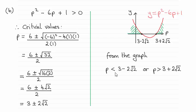And you can see then that they turn out to be two values. p is less than 3 minus 2 root 2, or p is greater than 3 plus 2 root 2. So if you're having problems with this, just take you through this. It's a typical question that you get on solving quadratic inequalities.